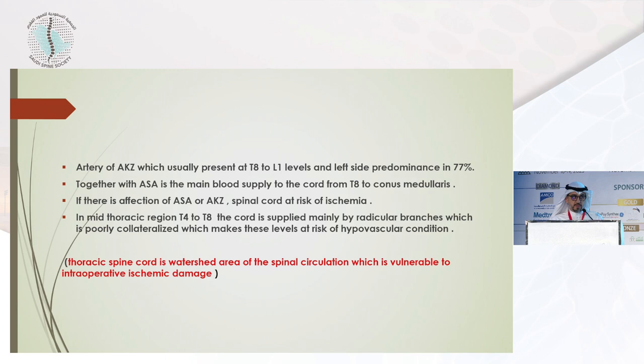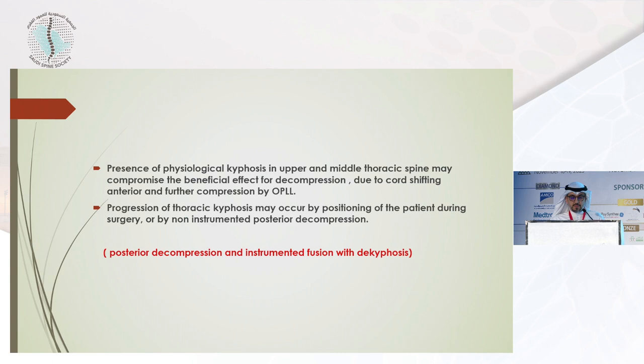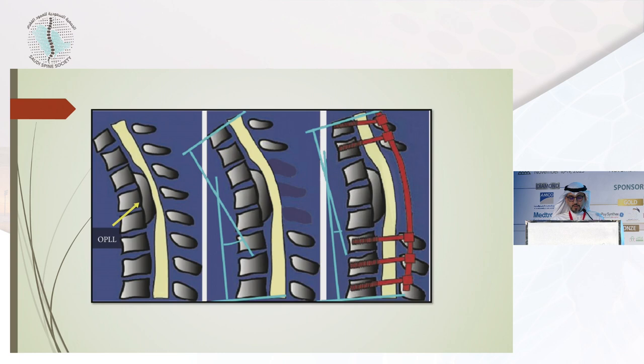Regarding spinal alignment: the presence of kyphosis in the upper and middle thoracic spine may compromise the beneficial effect of decompression alone, due to the cord shifting anteriorly and becoming further compressed by the OPLL. Progression of thoracic kyphosis may occur by positioning of the patient during surgery or by non-instrumented posterior decompression. This picture shows how to de-kyphosize or decrease the kyphosis at the decompression level with our instrumentation.